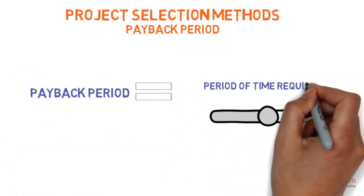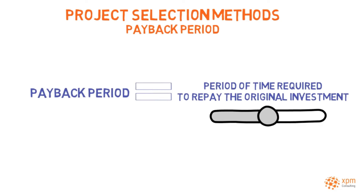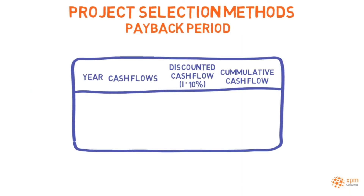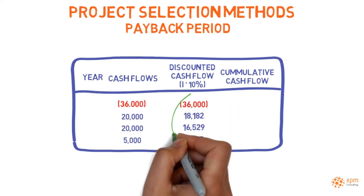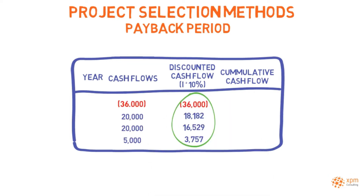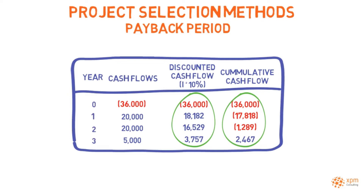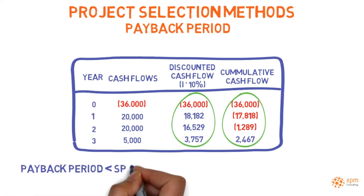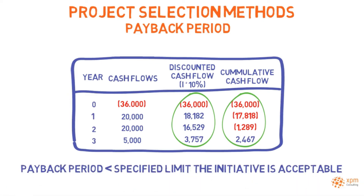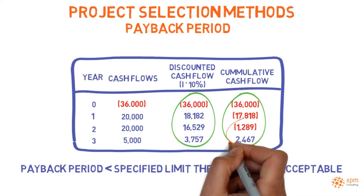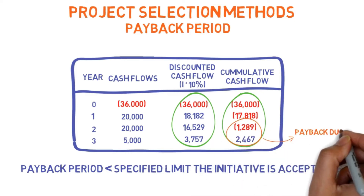Payback period is the period of time required for the project to repay the original investment. To calculate the payback period: first, estimate the future cash flows generated by the project; then, calculate the accumulated cash flow for each year; finally, count the number of periods necessary for the cumulative cash flow to reach zero. If the payback period is less than a specified limit, the initiative is acceptable. In this example, the initial investment is repaid during the third year.